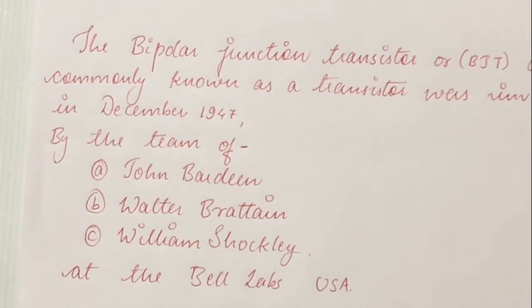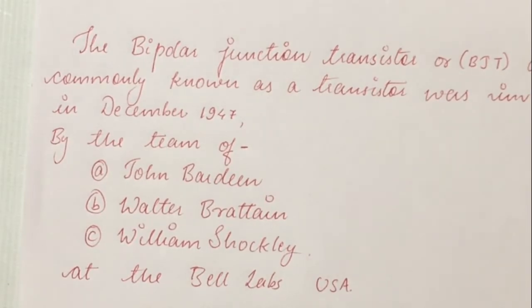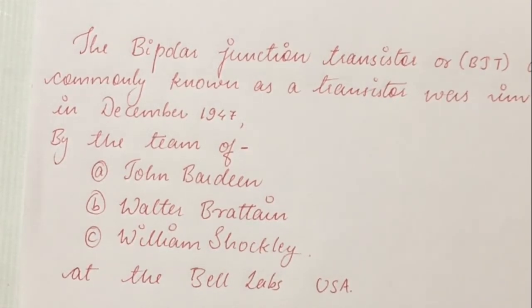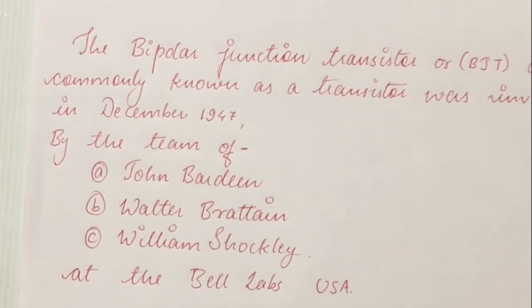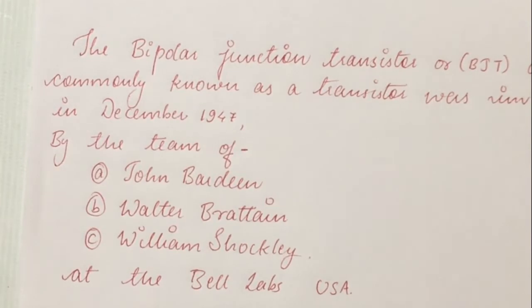In BJT, B stands for Bipolar. Bipolar is the name because there is involvement of both charge carriers — both electrons and holes — in the transistor. J stands for junction; two junctions are formed in the transistor, that is junction J1 and junction J2. J1 is also known as the emitter-base junction or input circuit junction, and J2 is also known as the collector-base junction or output circuit junction. T stands for transistor, coined from the words 'transferred resistor,' where 'trans' and 'resistor' combine to make the word transistor. In a transistor, the low resistance is transferred to high resistance.